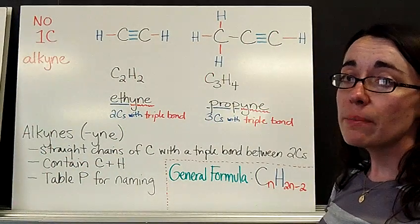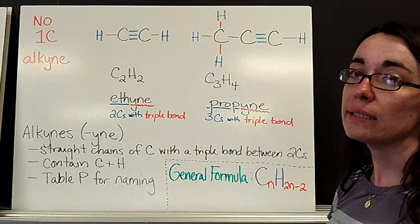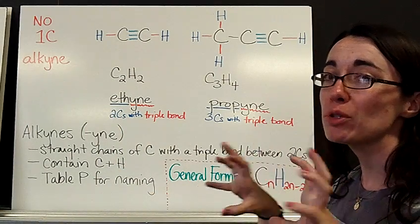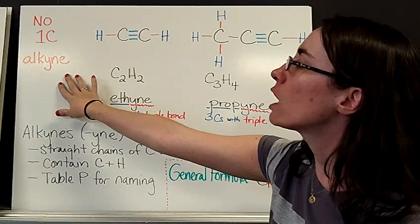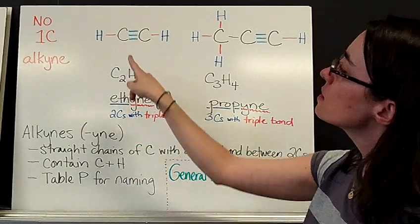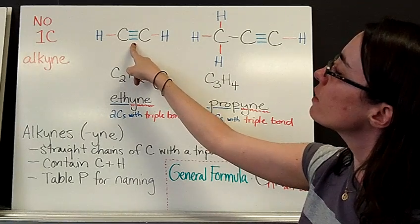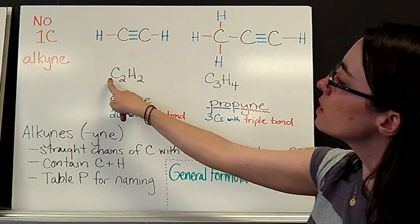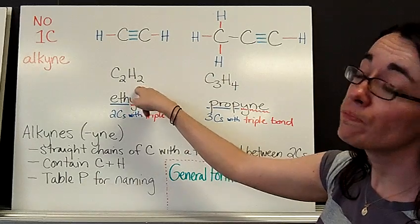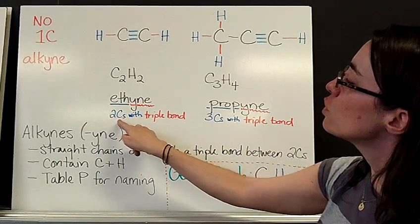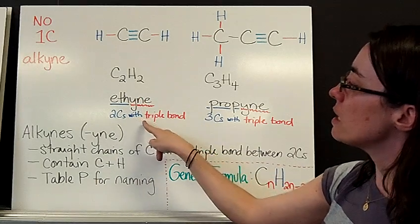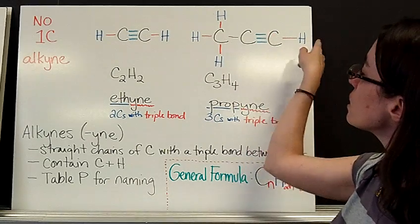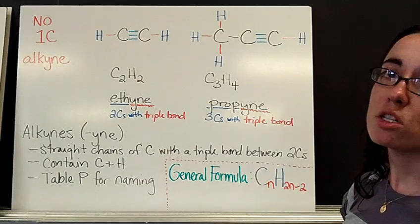The next family that you need to be familiar with is known as the alkynes. Alkynes cannot possibly have just a one-carbon version because we need to have a triple bond between the two carbons, so there's no such thing as a one-carbon alkyne. The smallest alkyne that exists has two carbons triple bonded together and then the only bond position left is devoted to the hydrogen. So this formula is C2H2 and we call this ethyne because there's two carbons. Yne is the ending when we have a triple bond.